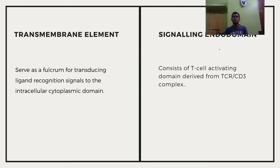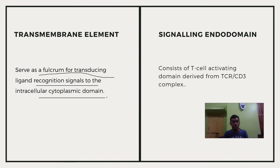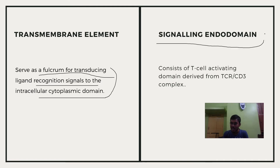The transmembrane element serves as a fulcrum for transducing the ligand recognition signal to the intracellular cytoplasmic domain, acting as a bridge connecting the recognition signal — the endodomain — to the ectodomain. The signaling endodomain, the last part or tail, consists of the T cell activating domain derived from the TCR or CD3 complex.